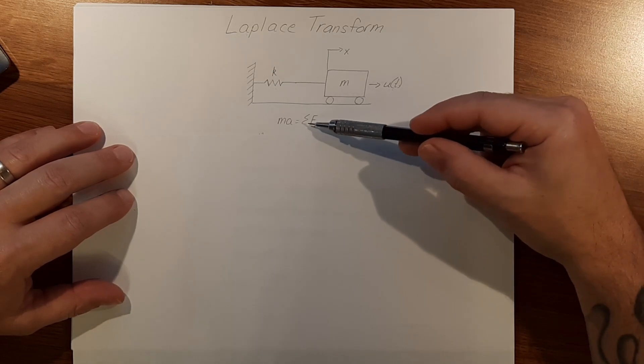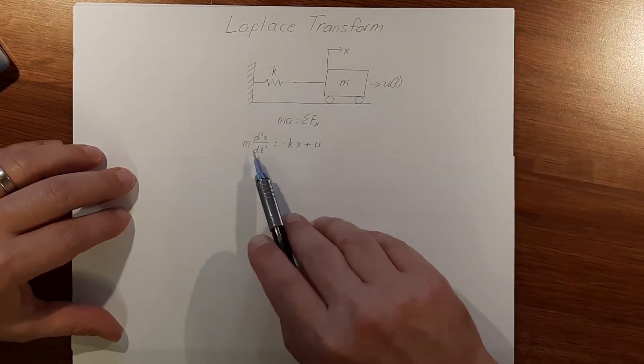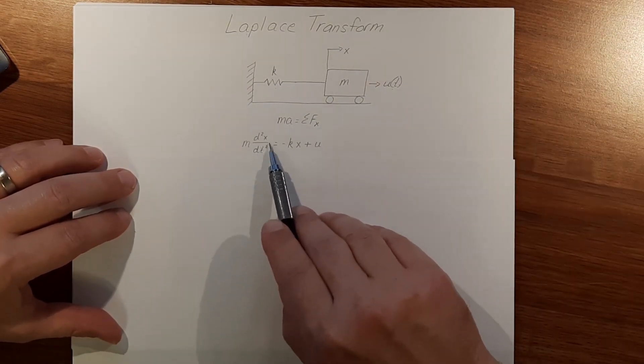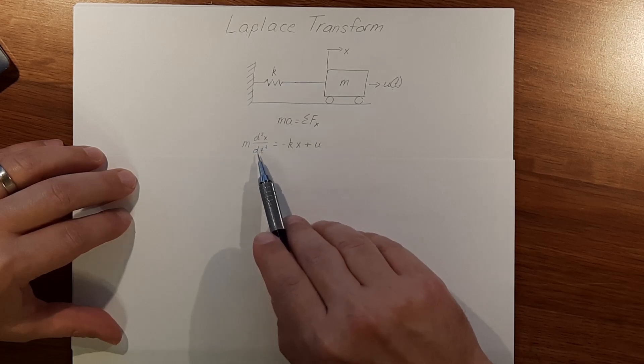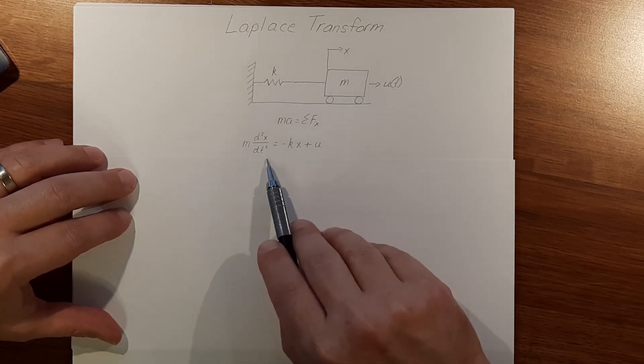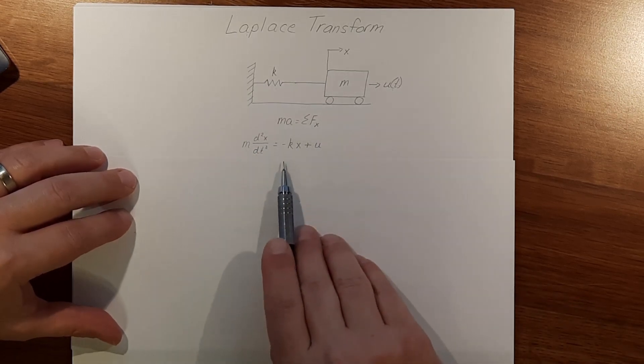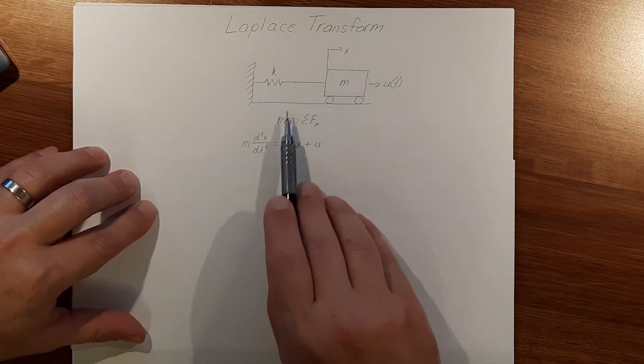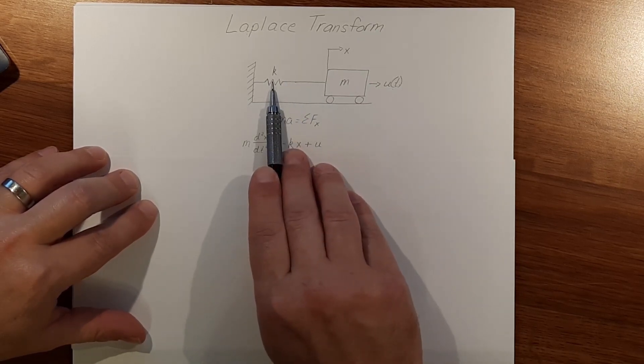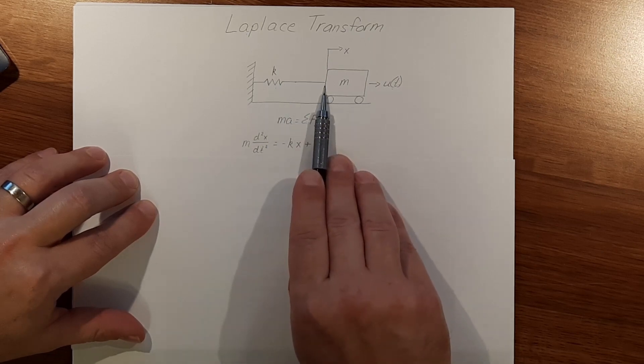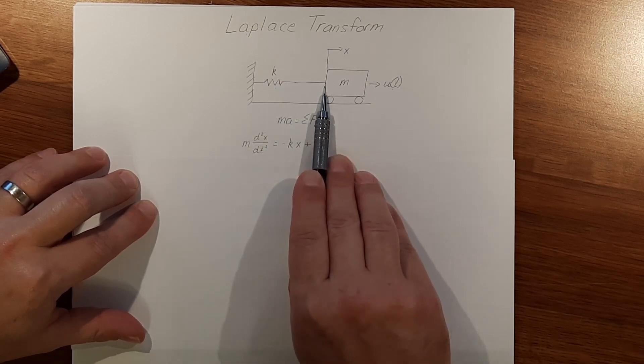We can write our differential equation from this. So we get mass times acceleration is equal to minus kx, which is the spring constant acting on the mass.